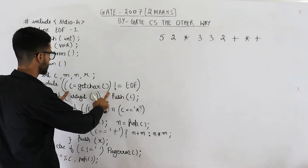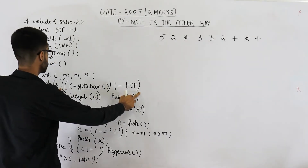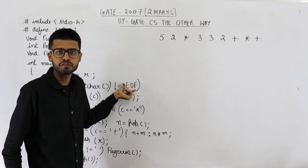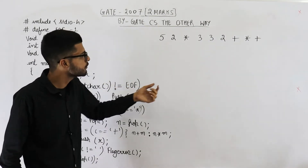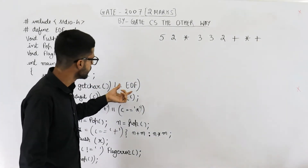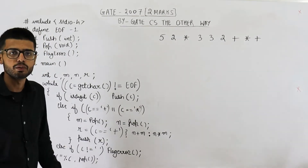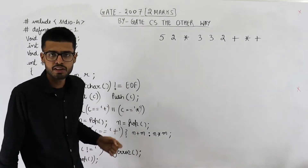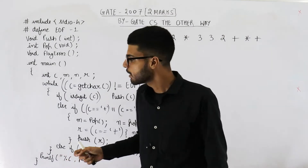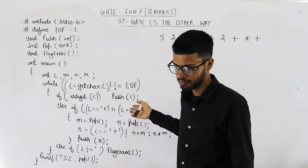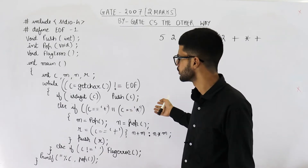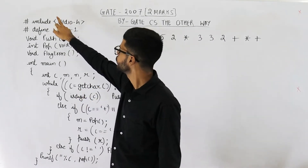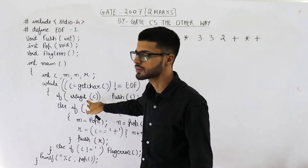Now come to one outer level of brackets. Whatever character was assigned to c, if it is not equal to EOF (end of file), that means there is some character, so enter the while loop. The first line inside the while loop is: if isdigit(c). isdigit is a predefined function — you need to include its header file, which is ctype.h. Not including it would cause an error, but there are some ambiguities in the program so just ignore that.